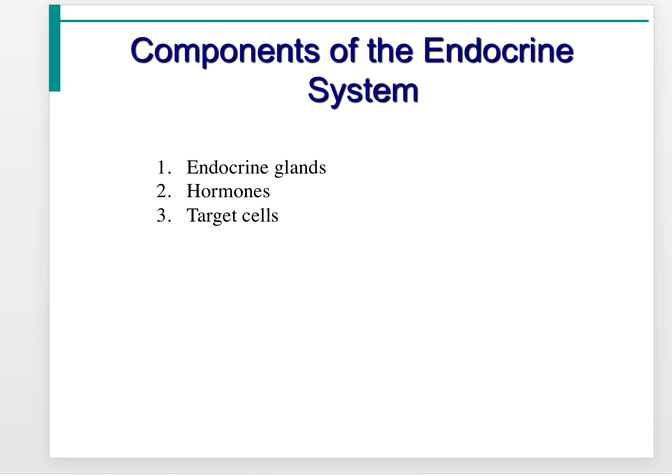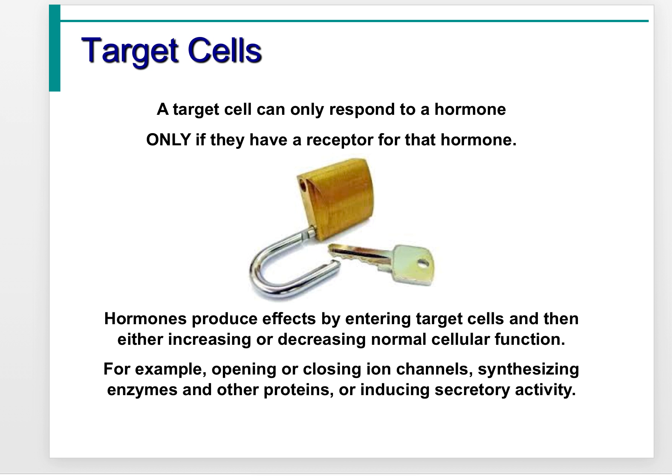The endocrine system comprises three different components: the endocrine glands themselves, the hormones that are released, and the target cells. The target cell can only respond to a hormone if it has a receptor for that hormone — hormones only affect cells that have a receptor for them. Hormones produce effects by entering the target cell and either increasing or decreasing normal cellular function, such as opening or closing an ion channel, synthesizing enzymes or proteins, or inducing secretory activity.